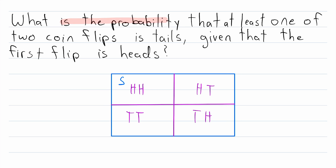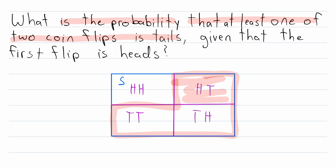What is the probability that at least one of two coin flips is tails if we have no other information? There are three possible outcomes where we have at least one tails, and they take up three-fourths of the total probability in the sample space. So the probability of this event is three-fourths.